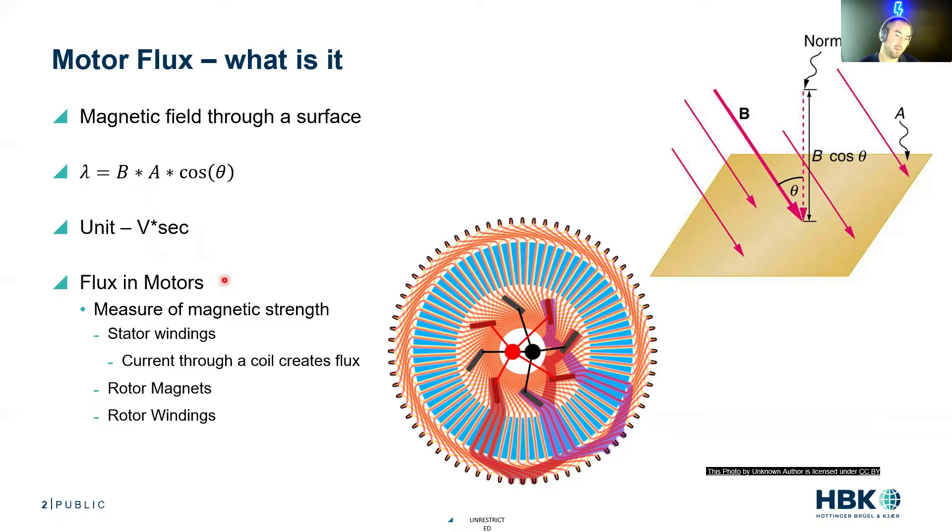Now, flux and motors, we're here to talk about motors. It's just a measurement of magnetic strength, and it could be a couple different places. It's a measure of magnetic strength in the stator windings, and this flux is caused by a current running through a coil.